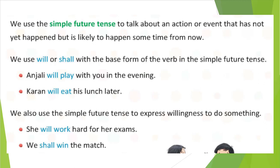Here we use the simple future tense to talk about an action or event that has not yet happened but it is likely to happen sometime from now. I have already told you — going to happen, or likely to happen in the future sometime. In a Corona crisis, school is closed, but in the future it may open. We are talking about an action or event that has not happened yet; it is about to happen or likely to happen.